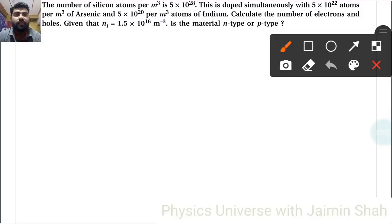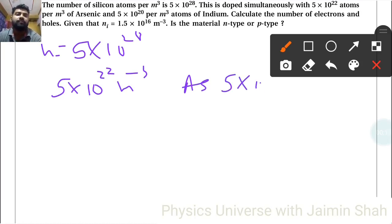The number of silicon atoms per meter cube is 5×10²⁸. This is doped simultaneously with 5×10²² atoms per meter cube of arsenic and 5×10²⁰ atoms per meter cube of indium.